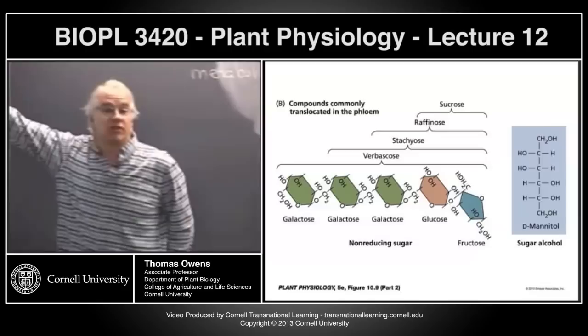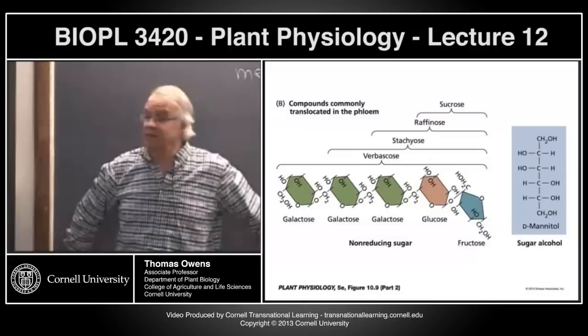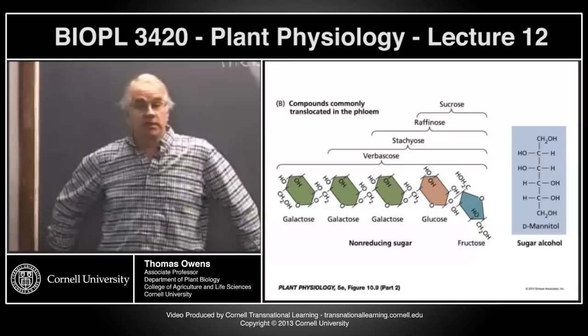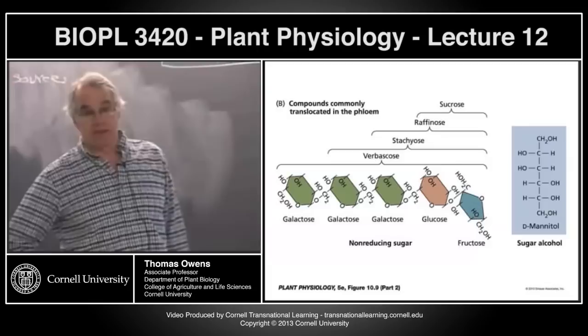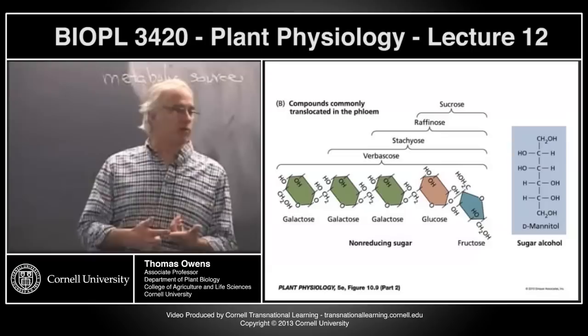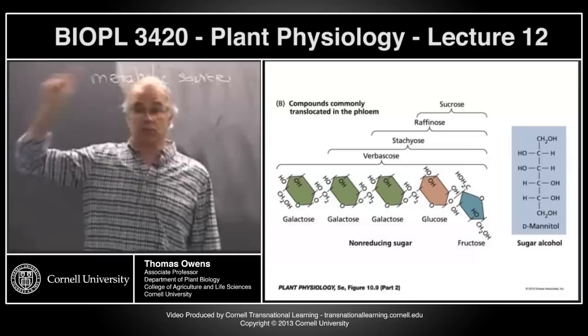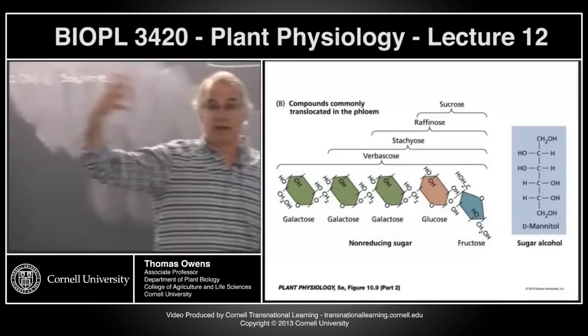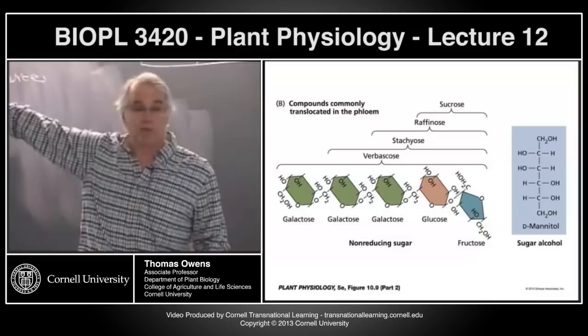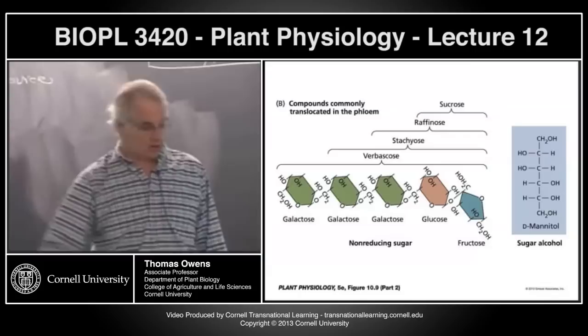Other types of plants translocate sugar alcohols — mannitol and sorbitol. For example, apple trees, prune trees, and cherry trees translocate sorbitol from the leaves to the metabolic sinks. These compounds are being translocated for two purposes: energy resources and carbon skeletons. The roots have to grow and make proteins — where do the carbon skeletons for amino acids made in the roots come from? They come from whatever compounds are translocated from the leaves.